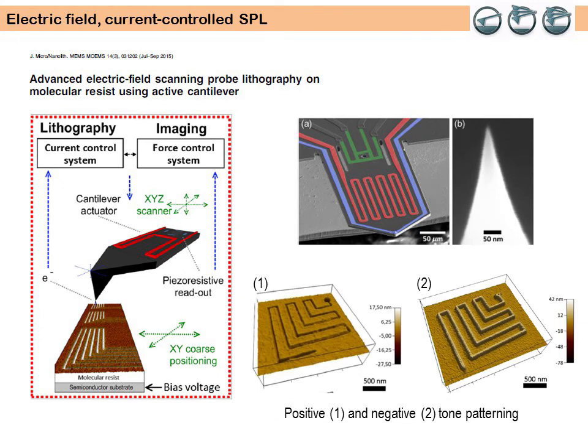SPL can imitate e-beam lithography. In this example, researchers from Ilmenau University of Technology developed a scanning probe-based lithographic tool based on field-driven electron emission. A potential difference is applied between a sharp conductive tip and a sample, inducing a high non-uniform electric field, which can trigger a multitude of physical and chemical processes at the nanoscale.